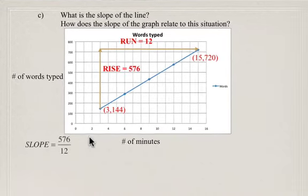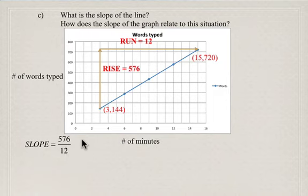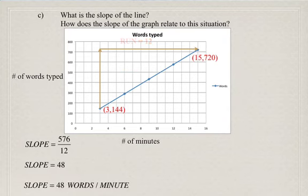So when we sub this into the formula for rise over run, the rise is 576 over 12, which simplifies to be 48. Now, this means that Bob can type 48 words per minute.